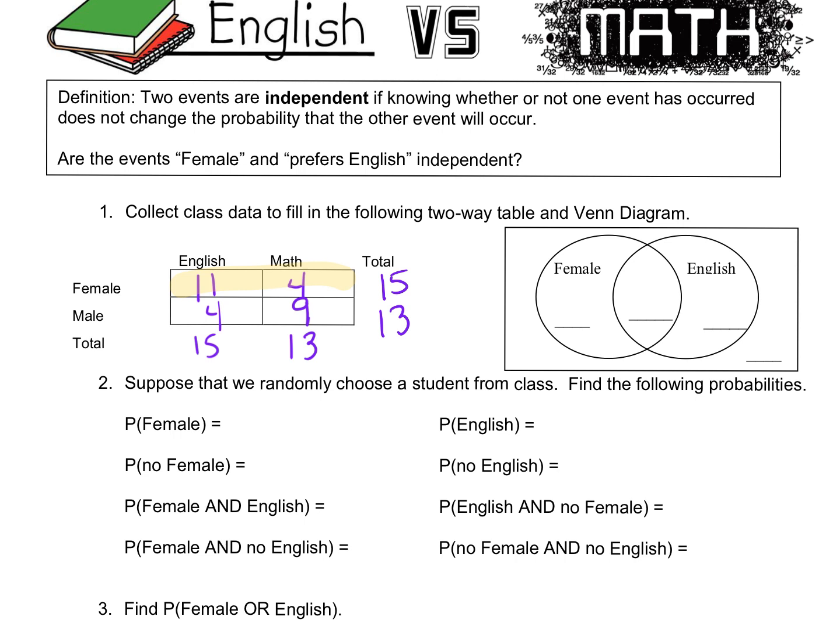So I've got a Venn diagram here that is female and like English. The intersection here are the females that not only are female, but also like English — it's a shared interest. And so that would be on the two-way table — you look at female, English — 11 goes right where that intersection is.